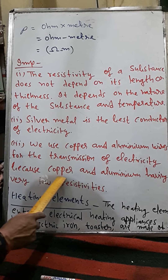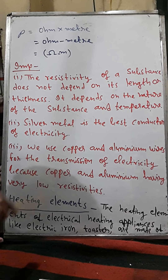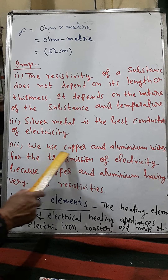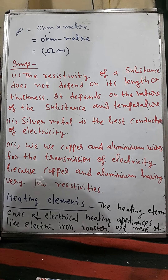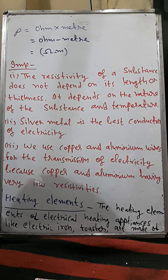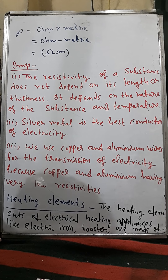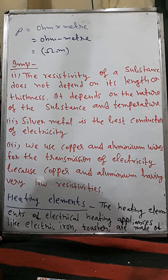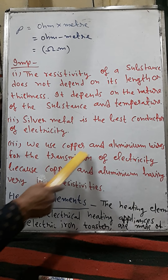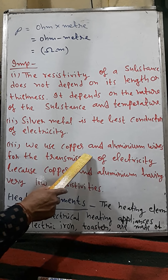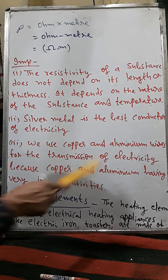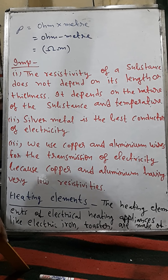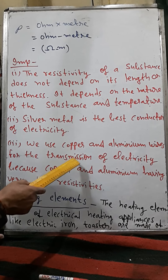We use copper and aluminium wires for the transmission of electricity because they have very low resistivity. The question arises: why don't we use silver for transmission lines? Silver is so costly that if used in transmission lines, it would be stolen. So we use copper and aluminium. In practice, even copper is expensive, so the main transmission lines you see outside homes are actually made of aluminium wire. The electricity department draws aluminium wire to provide domestic supply to your homes.